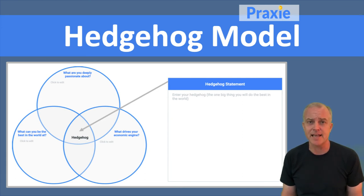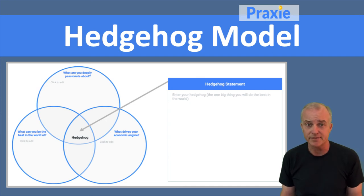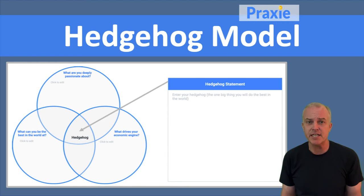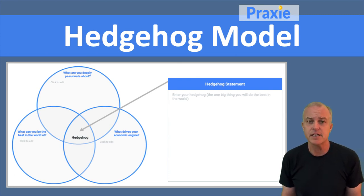The idea here is that a hedgehog — it's a metaphor — is the one thing that you will be the best in the world at. Just one. The idea is that you need strategic focus, and you can be the best at anything, but not everything. So what's that one thing? That's really about what your hedgehog is.